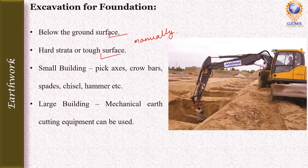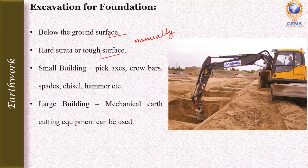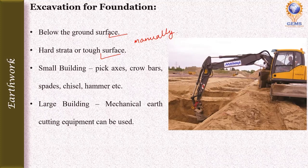Manual excavation is done by means of equipment such as pickaxes, crowbars, spades, chisels, and hammers. In case of a large building with deep excavation, mechanical earth-cutting equipment can be used — like a JCB or similar machine as seen in the figure. Nowadays this mechanical equipment is also used for small buildings.